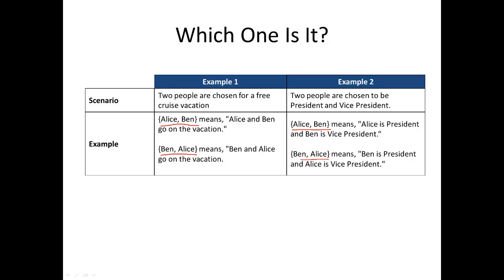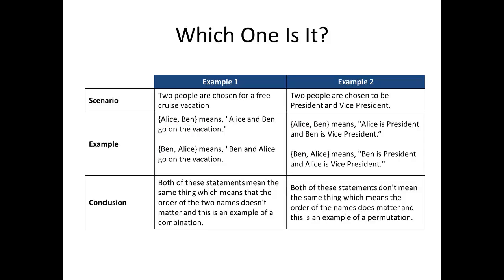So what can we conclude based on those results? In the first scenario, the two examples both mean the same thing — in both cases, Ben and Alice go on the vacation. Because both arrangements of the names give you the same result, that makes this an example of a combination where the order doesn't matter. In the second example, the first arrangement has Alice as the president, where the second arrangement has Ben as the president. Because changing the order gave us a different result, this would be an example of a permutation.